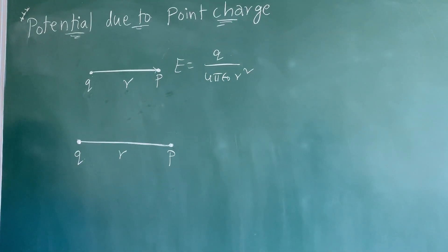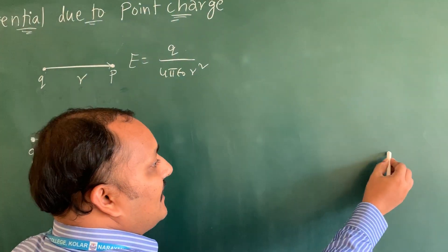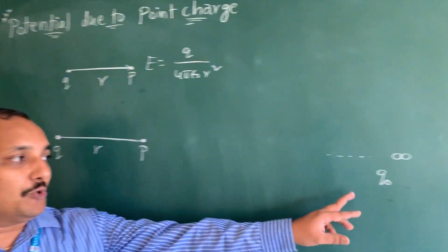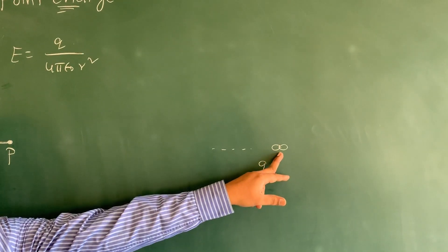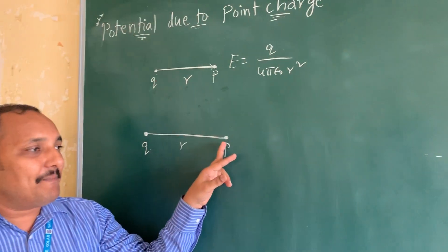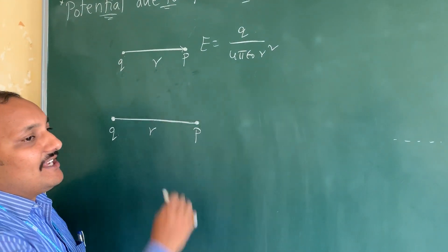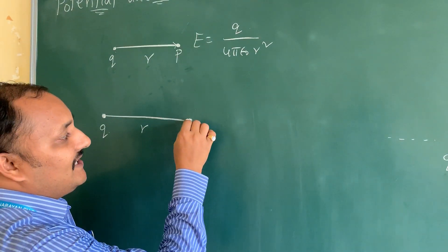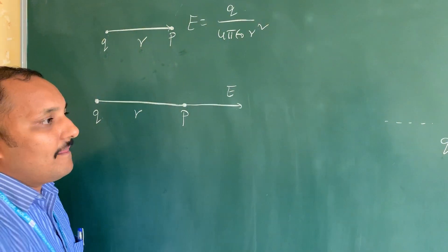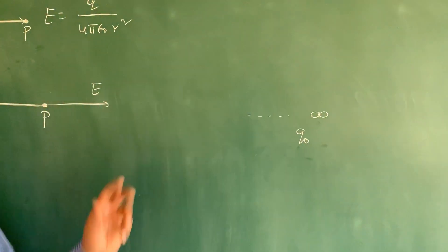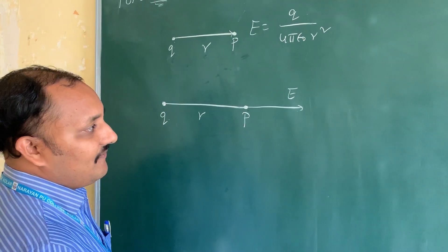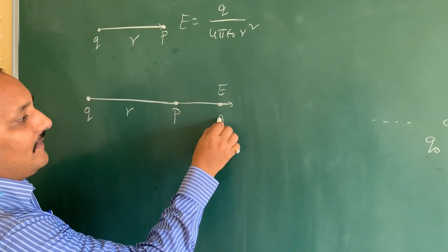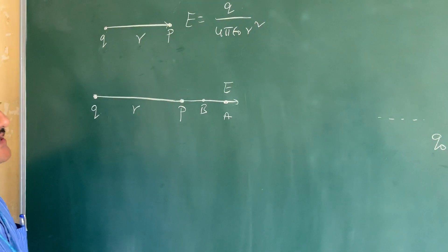What is the definition of potential? Potential means the amount of work done to bring a unit positive test charge from infinite distance to a point P within the electric field, against the direction of the electric field. The direction of the electric field will be pointing outward. So while bringing this charge, how much work are we going to do? We are taking a small displacement from point a to point b, a small distance.